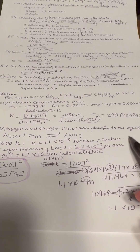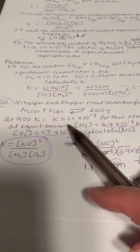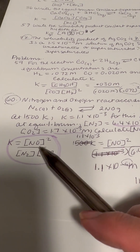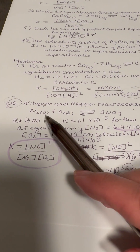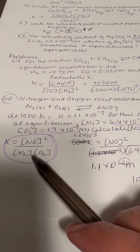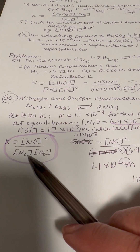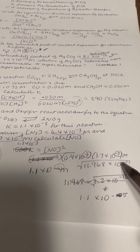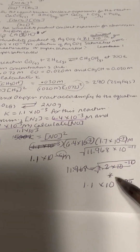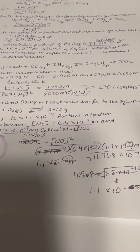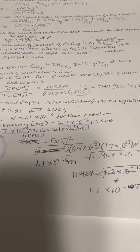Nitrogen and oxygen react according to the equation, and at 15K you're going to fill in the blanks again. The product is 2NO, so you put NO squared in the numerator, and N₂ and O₂ in the denominator. You fill in the values and you'll need to find the square root — you need a scientific calculator for that. That's where I'm going to end this video.